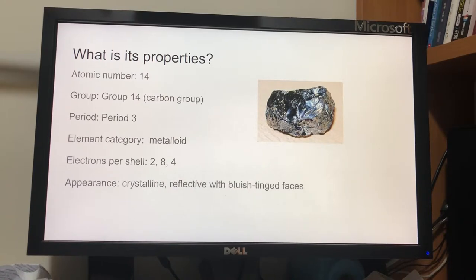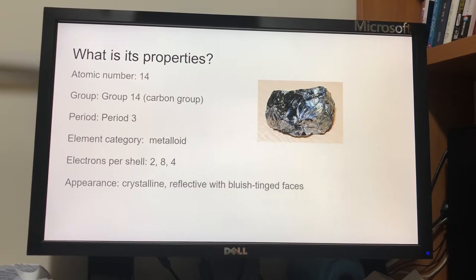What are its properties? Its atomic number is 14. It belongs to group 14 and period 3. It is a metalloid. It has 14 electrons, and electrons per shell is 2, 8, 4. Its appearance is crystalline, reflective with bluish-tinged faces.